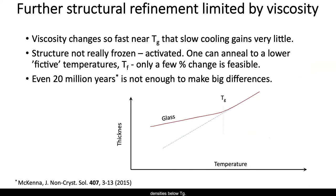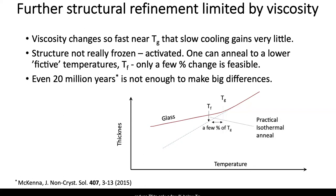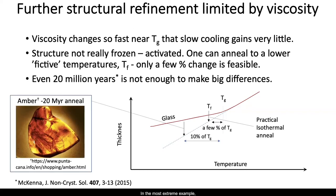One can cool slower or anneal to get to those higher densities below Tg. The glass would then be said to have a fictive temperature, Tf, which is lower than Tg. But since the restructuring rate is limited by viscosity, feasible experiments can reduce Tf to only a few percent below Tg. In the most extreme example, annealing amber for tens of millions of years reduces Tf by about 10%.